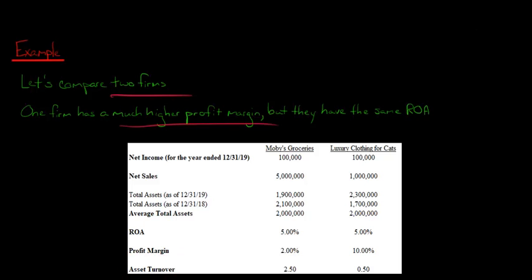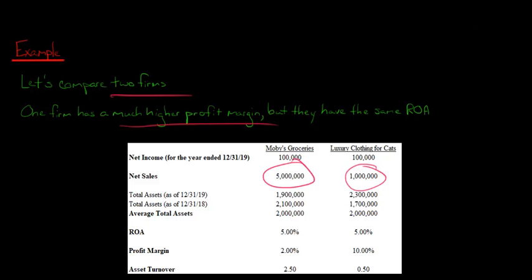Now let's get to the interpretation — what does this mean? Both companies in this example have the same amount of average total assets: $2 million each. Yet Moby's Groceries has $5 million in sales, where Luxury Clothing for Cats only has $1 million in sales. So Moby's Groceries, if we just think about average total assets and net sales, is much better at generating sales given the assets it has than Luxury Clothing for Cats.